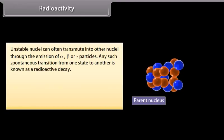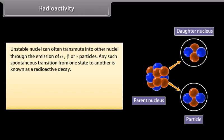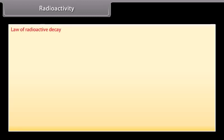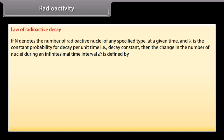Unstable nuclei can often transmute into other nuclei through the emission of alpha, beta, or gamma particles. Any such spontaneous transition from one state to another is known as a radioactive decay. There are three types of radioactive decay: alpha decay, beta decay, and gamma decay. Law of radioactive decay: If N denotes the number of radioactive nuclei of any specified type at a given time, and lambda is the constant probability for decay per unit time (that is, decay constant), then the change in the number of nuclei during an infinitesimal time interval dT is defined by dN is equal to N(T plus dT) minus N(T), which is equal to minus N(T) lambda dT.